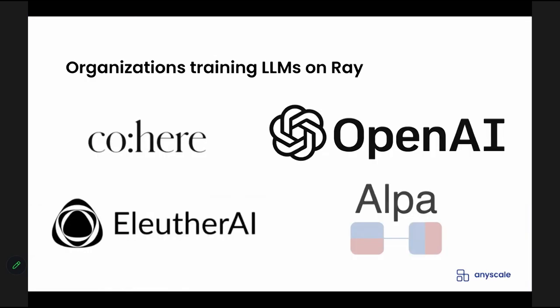Here are some examples of companies using Ray for foundation models. Cohere trains large language models. OpenAI also trains large language models — the workloads required include supervised pre-training as well as reinforcement learning from human feedback, which incorporates human input about which response to a particular question is better than another. There are open source versions as well, like GPTJ, also built on top of Ray, as well as projects like Alpa coming out of UC Berkeley. These are exciting projects and organizations training, creating, and serving these large language models using Ray.